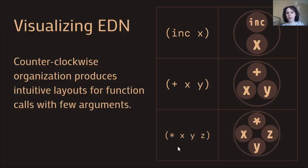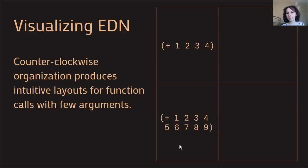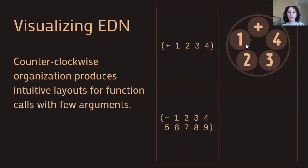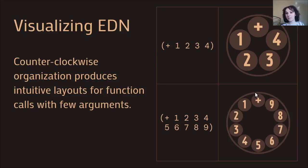For a function call of three arguments, it's still somewhat left to right. But as the number of arguments increases, it becomes less obviously left to right. With many arguments, it may even go right to left for the first couple. So you have to keep in mind that things are organized in a counterclockwise way.